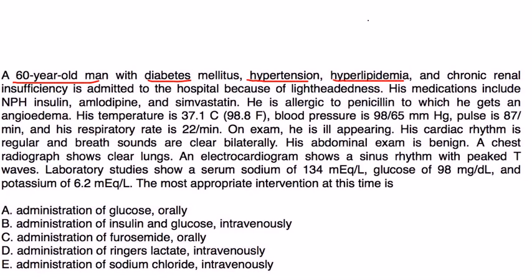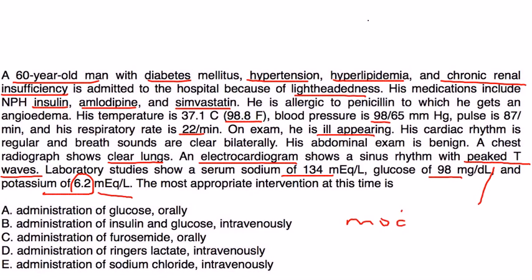Let's take a look at a few vignettes. A 60-year-old man with diabetes, hypertension, lipidemia, and chronic renal insufficiency is admitted to the hospital because of lightheadedness. His meds include insulin, amlodipine, simvastatin. He is allergic to penicillin, which causes angioedema. Temperature 98, blood pressure 98, pulse 87, respiratory rate 22. On exam he is ill-appearing, cardiac rhythm is regular, breath sounds are clear, abdomen is benign. Chest X-ray shows clear lungs. EKG shows sinus rhythm with peaked T waves. Lab studies show serum sodium 134, glucose 98, potassium 6.2. Most appropriate intervention at this time? Because of his potassium value and his EKG, I put him in the moderate category, so you have to get a bit aggressive. The very first thing you want to do that's listed among these choices is give him insulin so you can drive the potassium back into the cells. You need to give glucose in addition, because if you just gave him insulin, he would go into hypoglycemia.